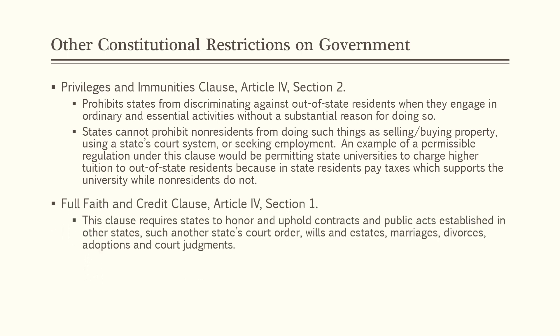The Full Faith and Credit Clause — that's Article 4, Section 1 — requires states to honor and uphold contracts and public acts established in other states. Those things include another state's court order, wills and estates, marriages, divorces, adoption, and court judgments. This basically allows people to move from state to state without having to get remarried every time or suddenly having their 10-year marriage in one state not recognized in another state.